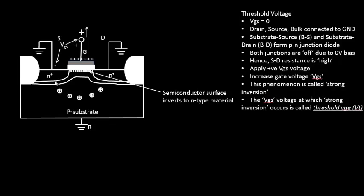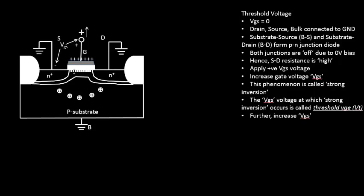Now, this area is completely depleted of its majority carriers — holes. When we further increase the gate voltage, since the gate is positively charged, it can no longer repel holes (they're already gone), so it must attract more negatively charged particles. All hole repulsion has already been done. So the next thing that happens is it attracts more and more electrons underneath the channel. The question is: where do these electrons come from?